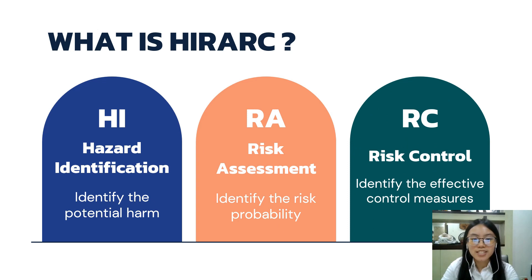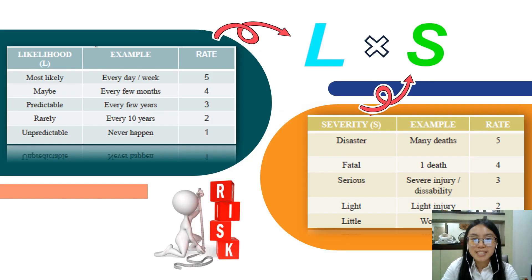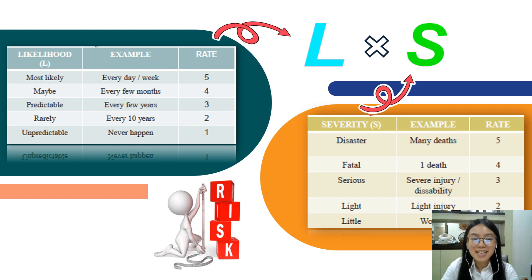Hazard Identification is to identify the potential harm and its causes during a work activity. Risk Assessment is to identify the risk probability. It can be calculated by using the formula L (Likelihood) times S (Severity). Both L and S are categorized into five levels with respect to rate.